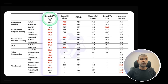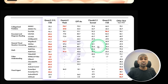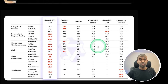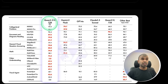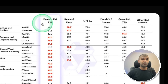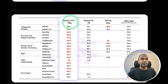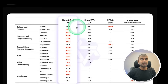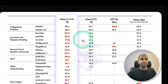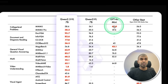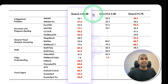They released Qwen 2.5 VL in two different versions: the 72 billion parameter model competing with all top models, and the 7 billion parameter model, which is clearly better than GPT-4o Mini.